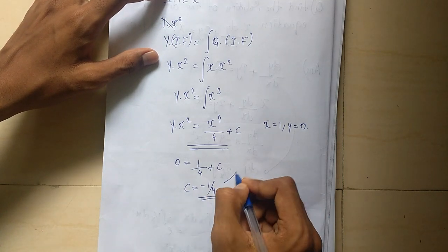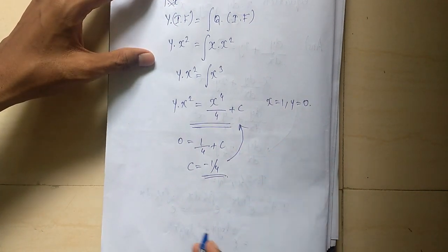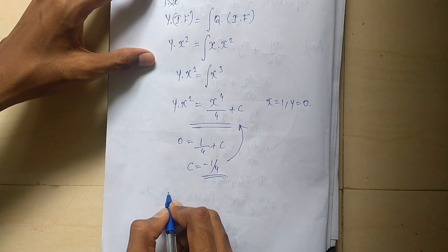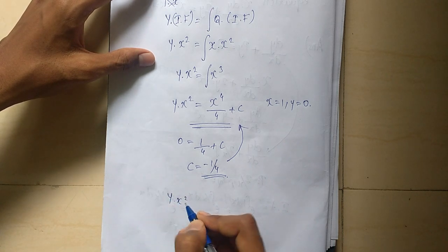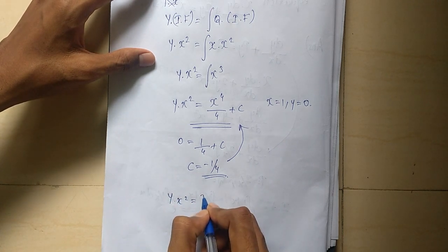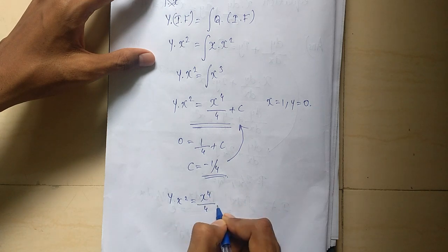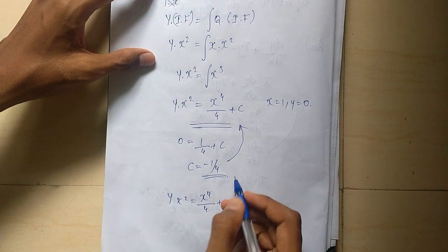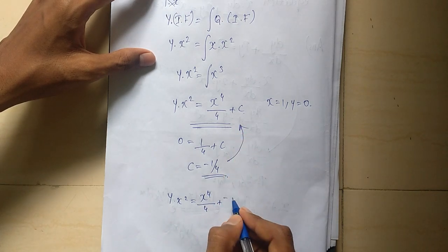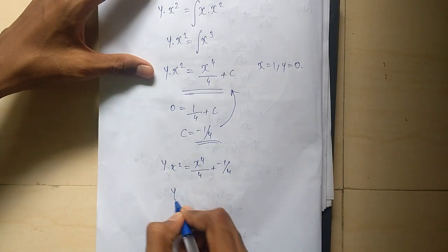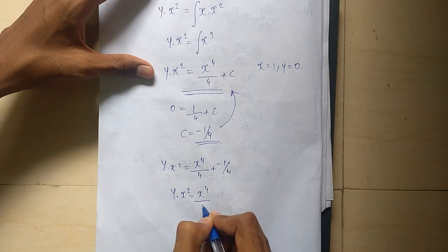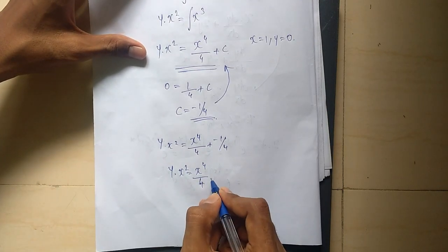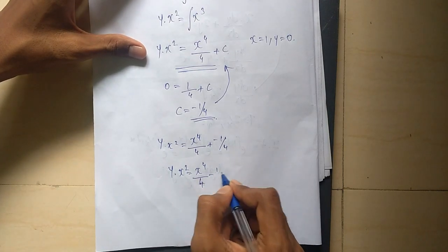Substituting the value of c, we get y into x squared equals x raised to 4 by 4 minus 1 by 4. This is our final answer for the first problem.